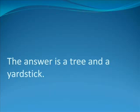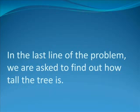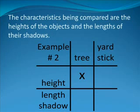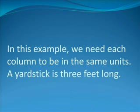Next, ask yourself what two objects are being compared. The answer is a tree and a yardstick. In the last line of the problem, we were asked to find out how tall the tree is. Therefore, tree goes at the top of the second column and yardstick goes at the top of the third column. The characteristics being compared are the height of the objects and the lengths of their shadows. Thus, we fill in the box as follows.